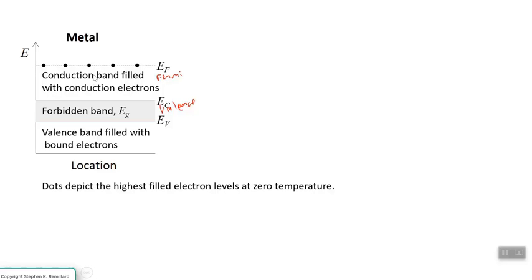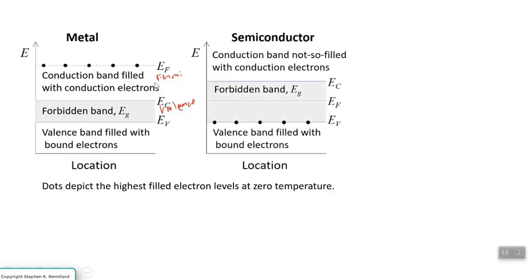The conduction band can have a lot of electrons in it for metal. Nobody lives in the forbidden band, and the people in the valence band can't go anywhere. The metal is characterized by having a lot of electrons above the conduction band edge, E sub C. And so they are free to move, as opposed to a semiconductor,